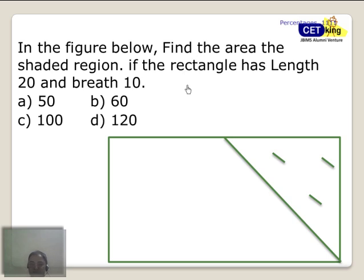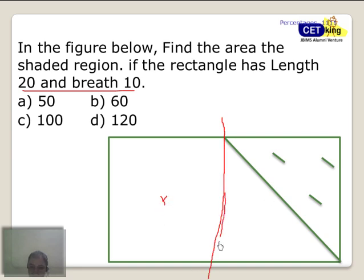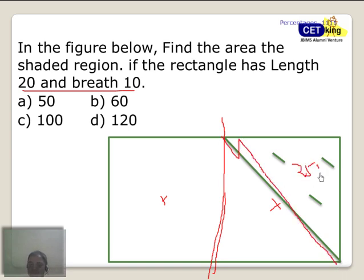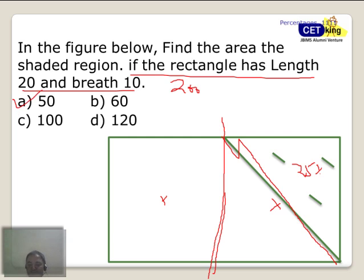Next question — please pause the video and try it yourself. We have to cut the uniform figure into parts. The moment I know the dimensions are 20 and 10, I can break them. Drawing the center line and breaking like this, this figure and this triangle are equal. This figure is half of that, so this area is 25%. Total rectangle area is 200, so this is 25% of that, which is 50.